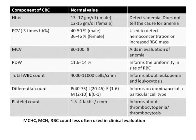Mean corpuscular volume is the mean volume of the red blood cells and is a very important component of complete blood count. When a patient has anemia, the first thing you should look at in the CBC is the MCV, because anemia is classified based on it. If it is less than 80, it is microcytic anemia; if it is in the normal range, it is normocytic anemia; and if it is higher than 100, it is macrocytic anemia. It is a critical component of complete blood count.